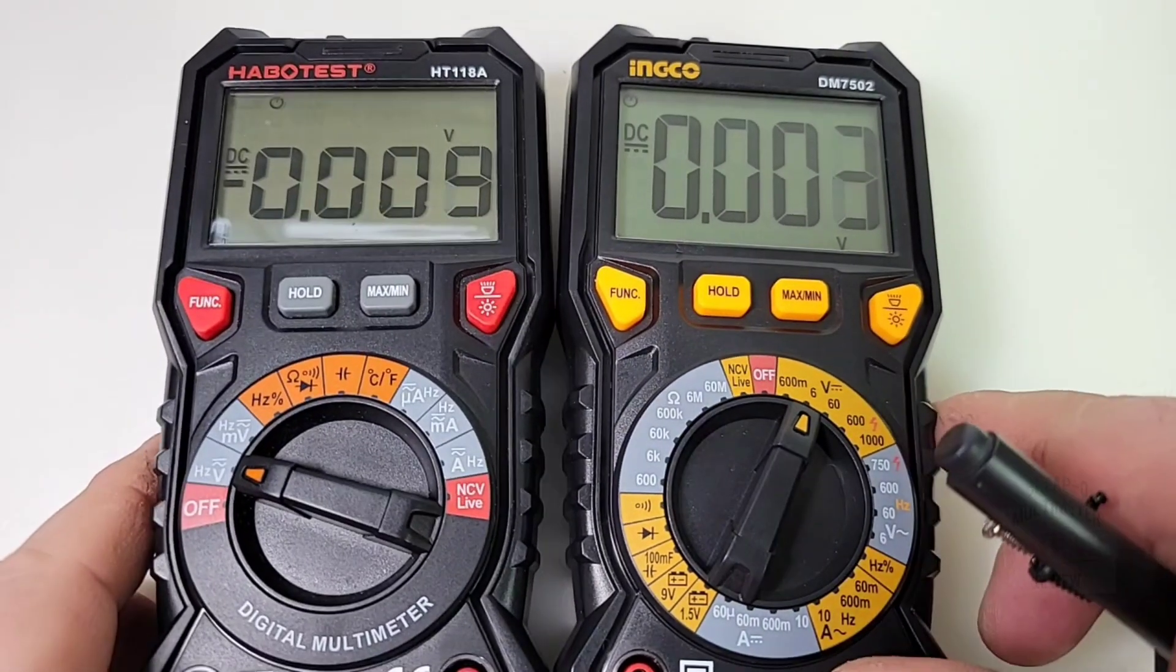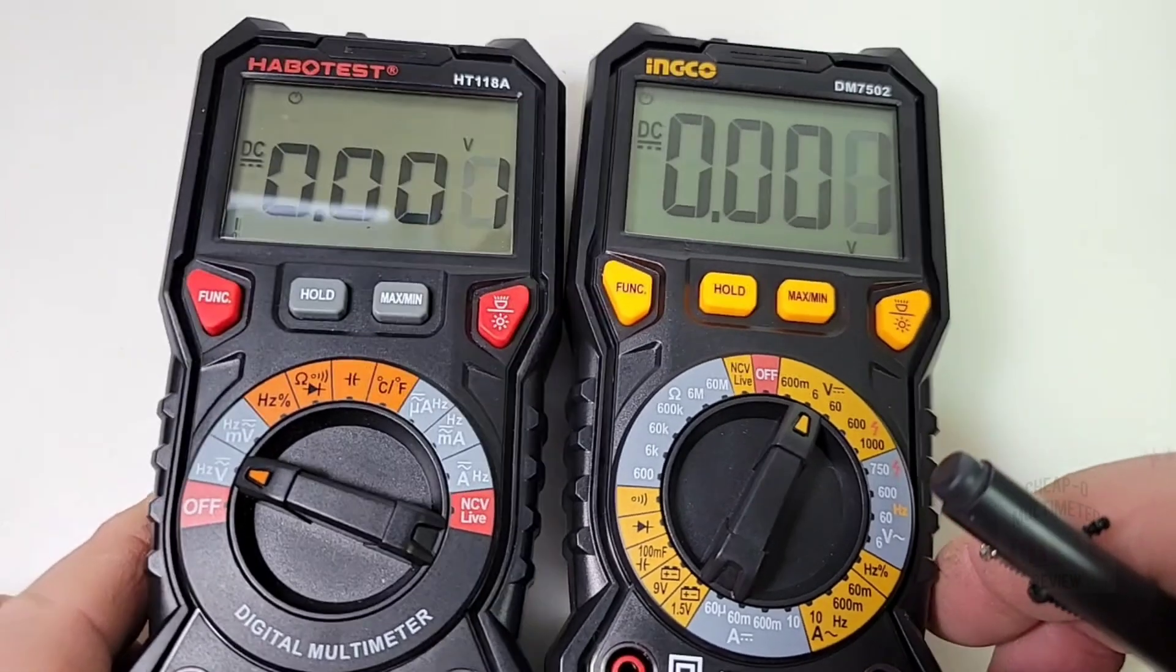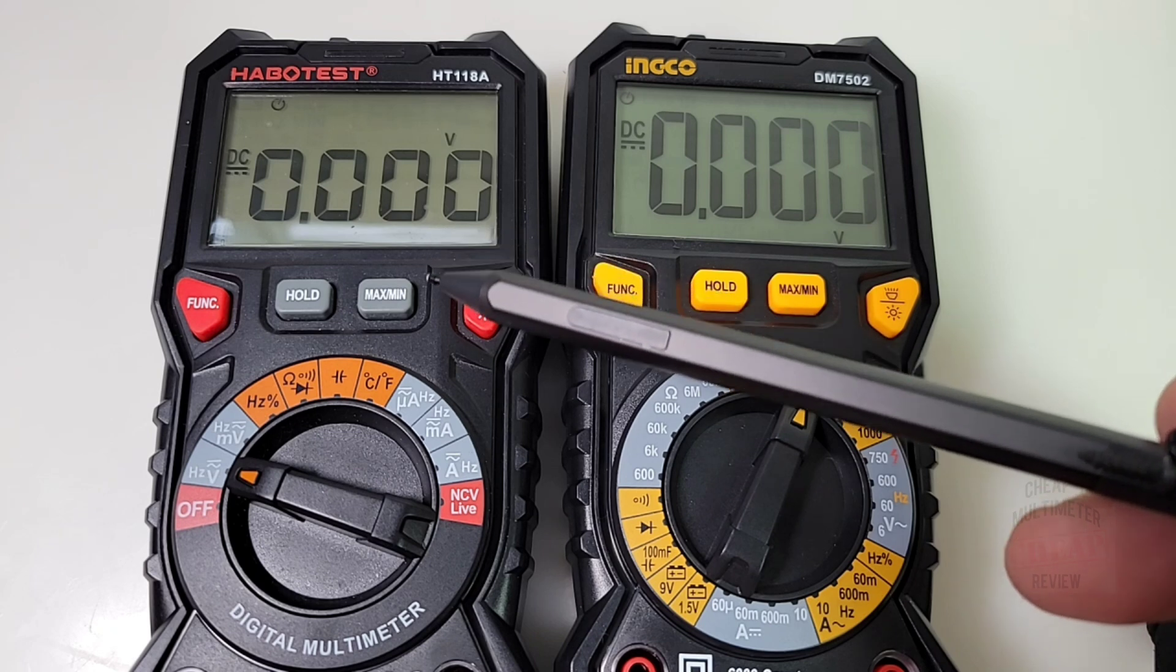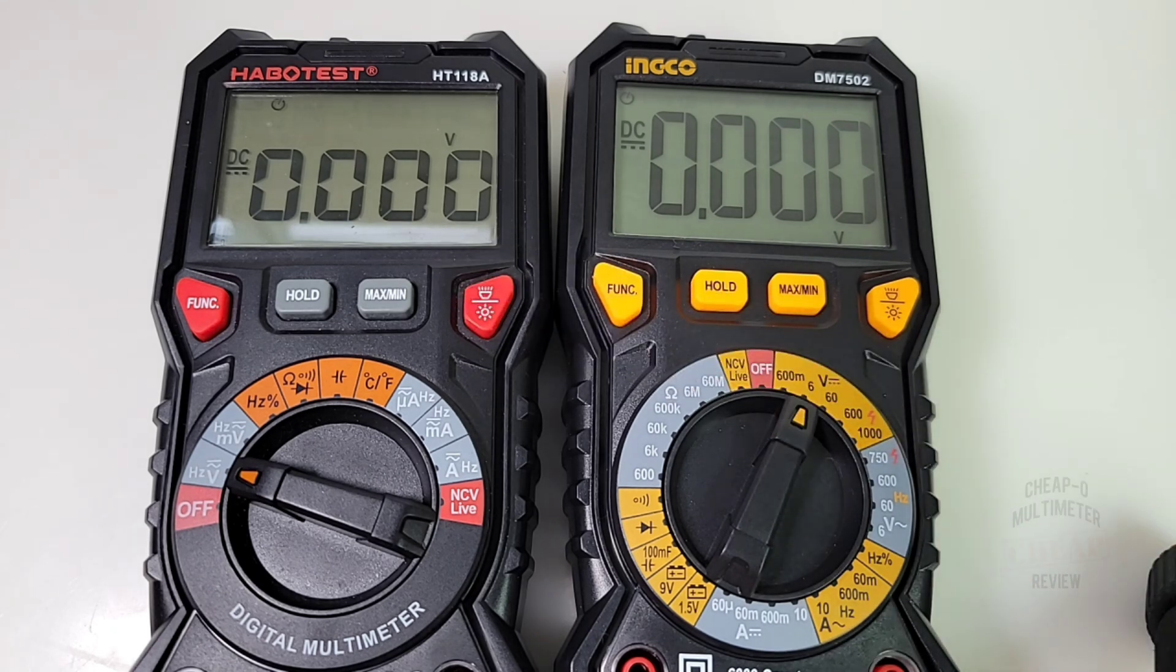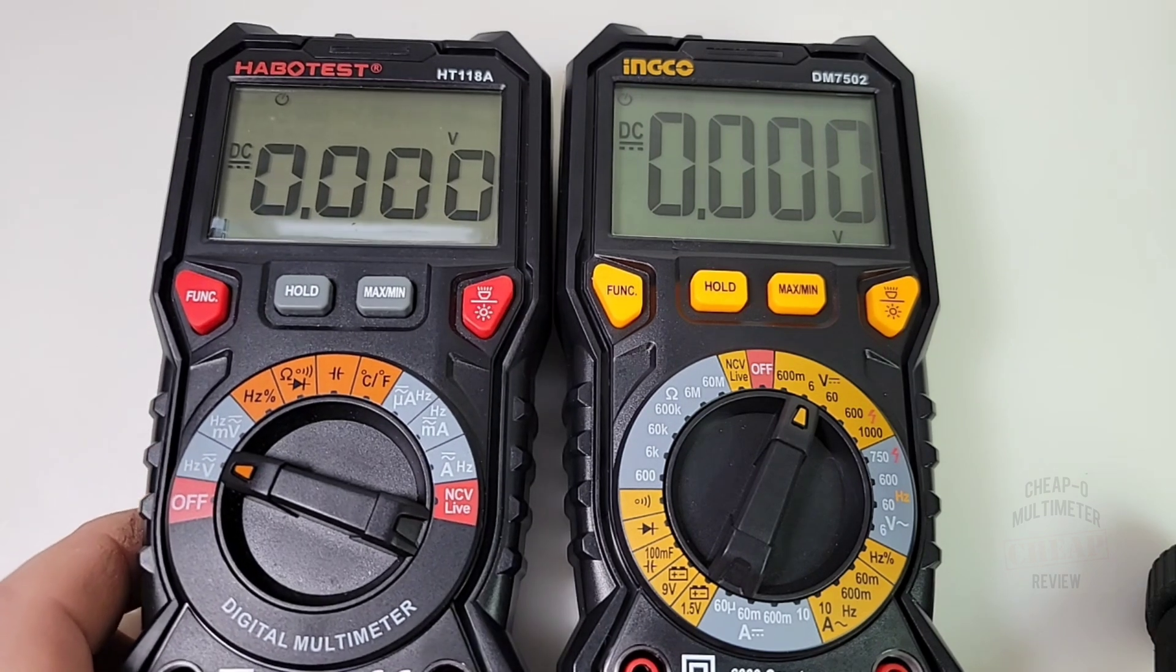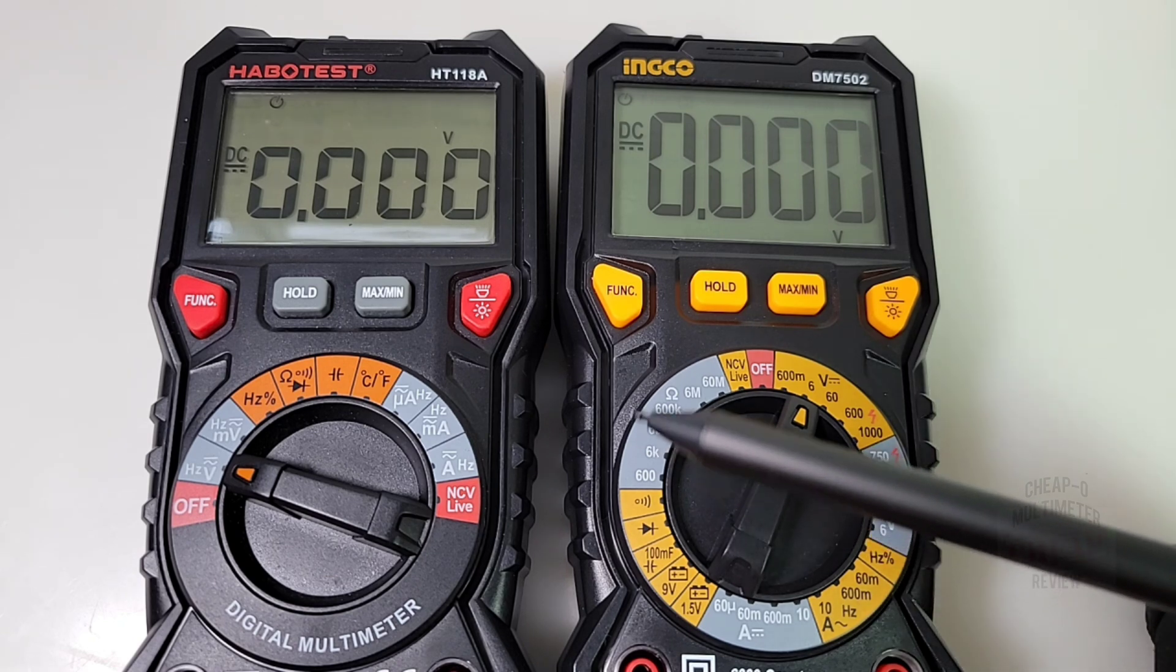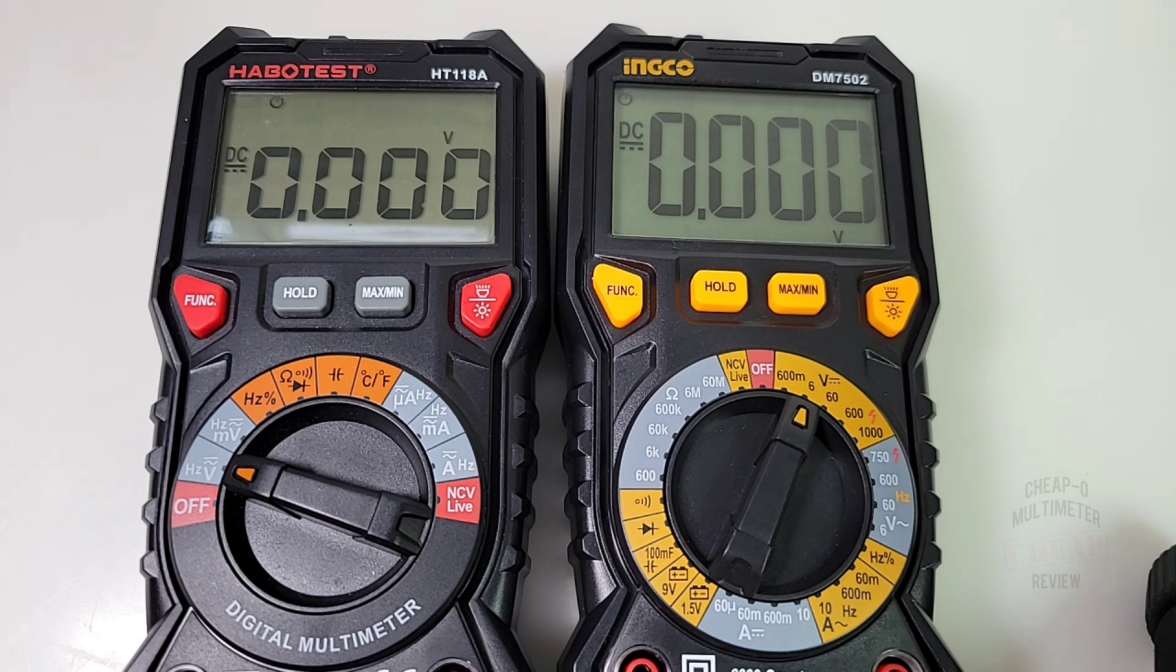Now, if we take a look at the display itself. Notice anything? Yeah. A lot more chunky, funky on the Inco than the Habotest. Habotest has that sort of diminutive, but nonetheless, unique style font. Not so on the Inco. So, mileage may vary up to you. Personal preference, really. I don't really have one myself. If I had to choose, I would probably go with the Habotest just because you can get more on that display. But yeah, the display itself is different.